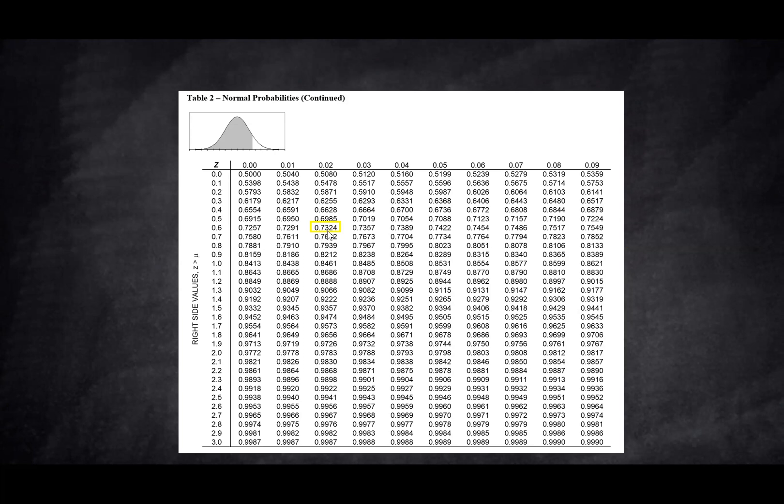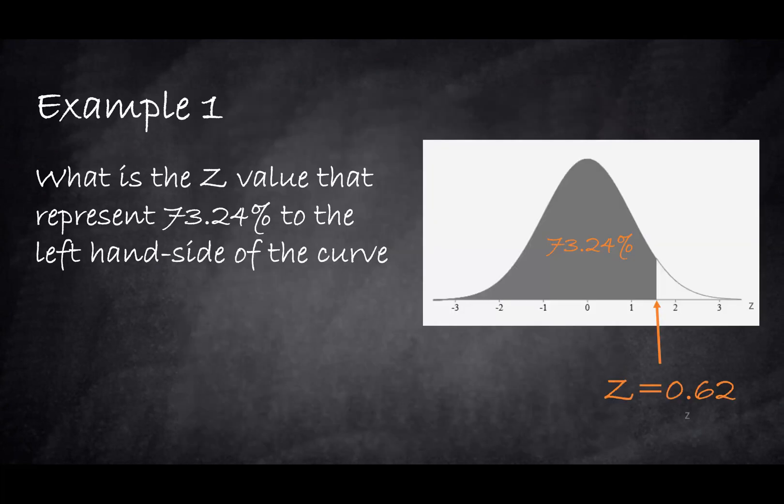Now what we'll do is a reverse lookup. We look back to what is the first decimal number, so that's 0.6, and the second decimal is 0.02. So together we get that our Z value is 0.62. If we look back at the distribution, for Z = 0.62 its representation is 73.24% area under the curve.